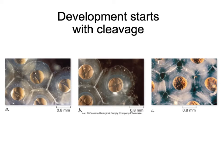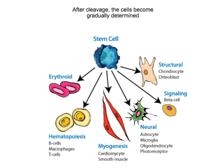So these cells at this point, if you do anything to them — if you split them — you will result with new embryos. They can form a completely entire organism, including a placenta. And this is a question of how a single cell slowly becomes more and more determined and more committed to a specific path, becoming a specific type of cell.